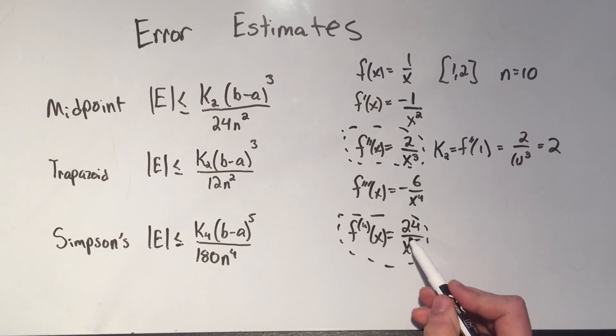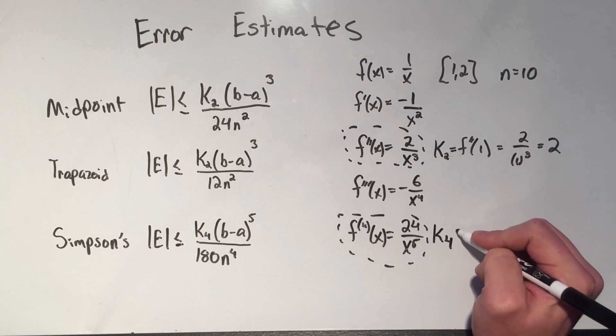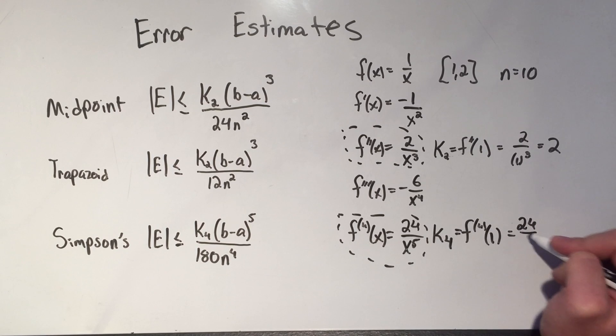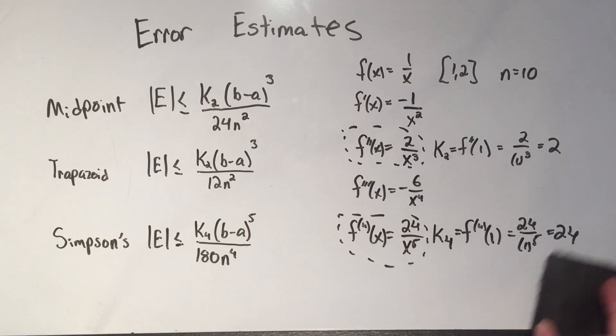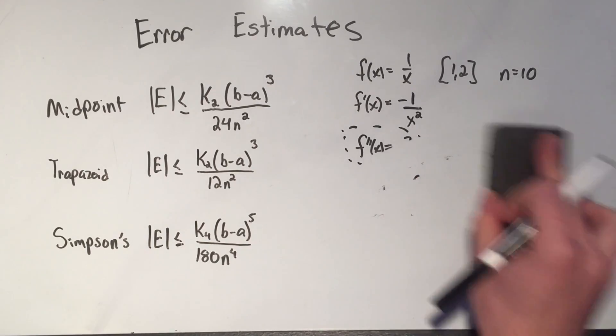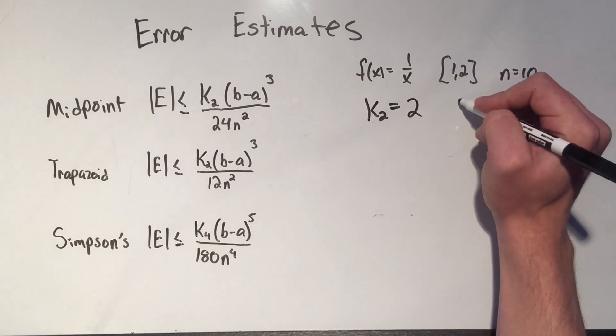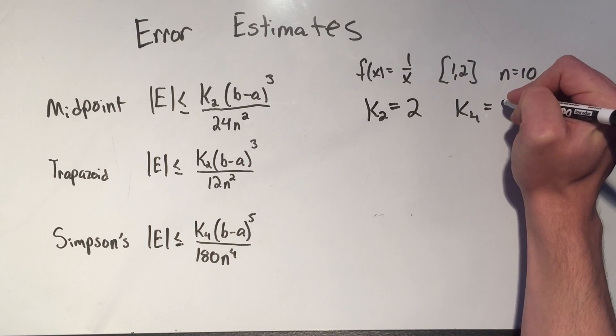And same thing here, since this is a decreasing function always, the bigger values I plug in for x, the smaller it's going to be. I want to plug in the smallest thing I can, my k₄ is going to be my fourth derivative evaluated at one in this case, that's 24 over one to the fifth, which is 24. So there is my k₂ and my k₄. I'm going to erase this. If you want to see that again, then you can just rewind, but we got k₂ to be two, we got k₄ to be 24.